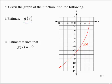When the input is 2, what's the output? Negative 6. So, g of 2 is negative 6.